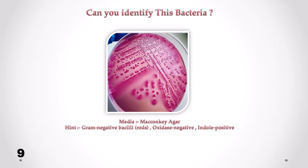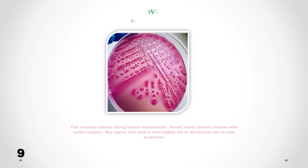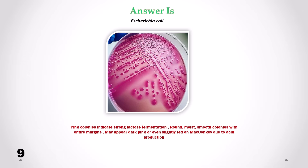Can you identify this bacteria? Correct answer is Escherichia coli. We can see pink colonies which indicate strong lactose fermentation. Colonies look round, moist, smooth with entire margins. May appear dark pink or even slightly red on MacConkey due to acid production.